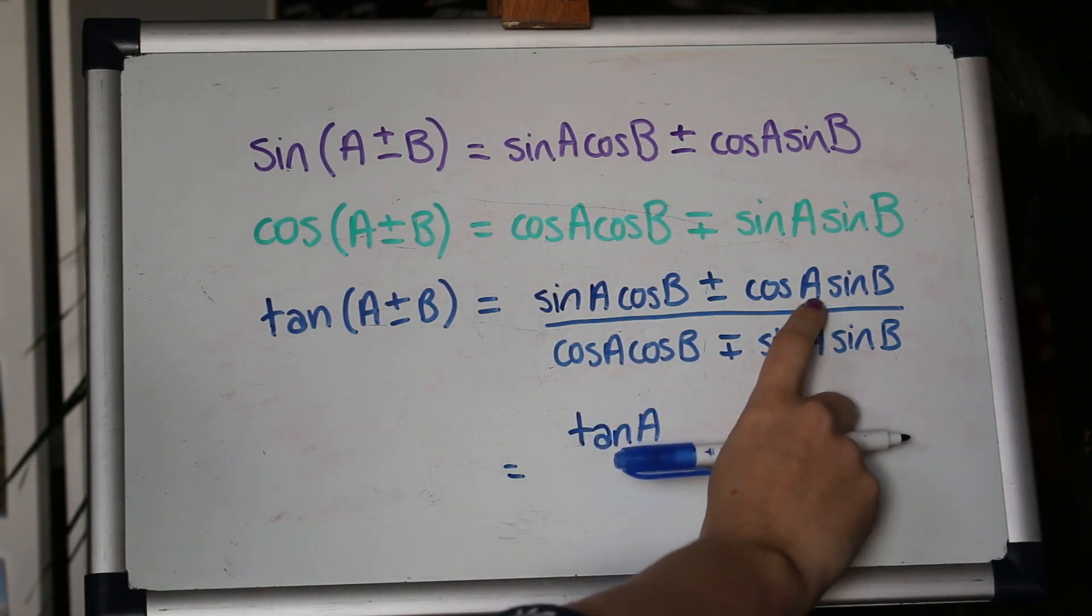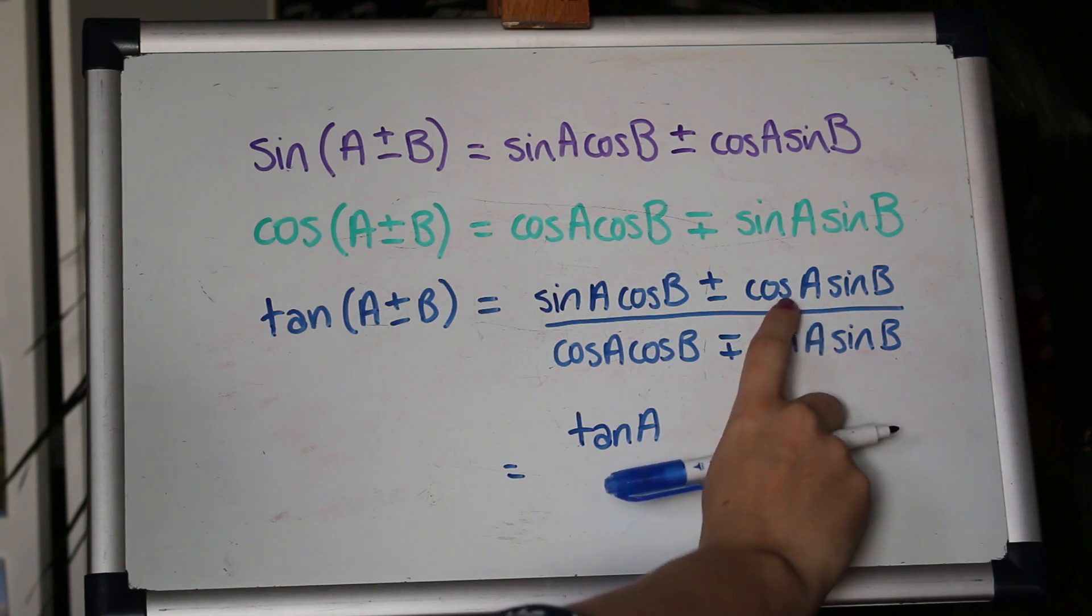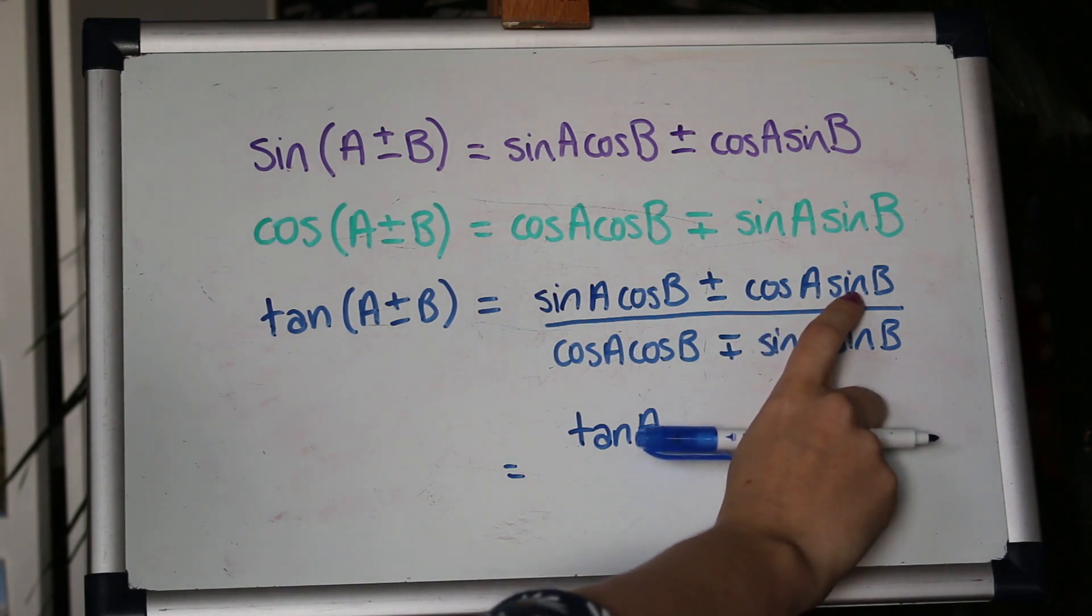This term we're dividing by cos a cos b, cos a divided by cos a cancels out and sin b divided by cos b gives us tan b.